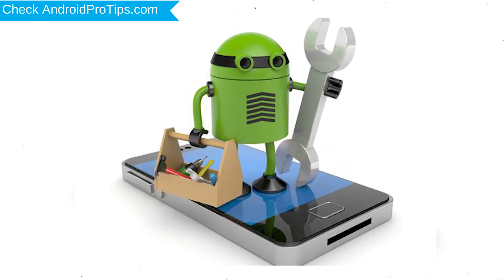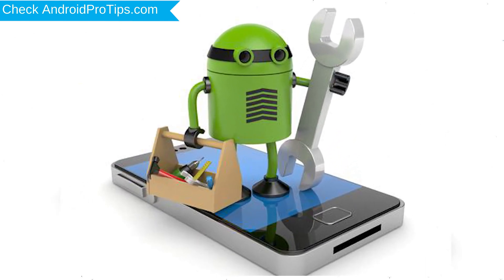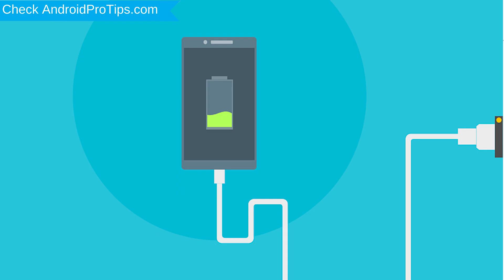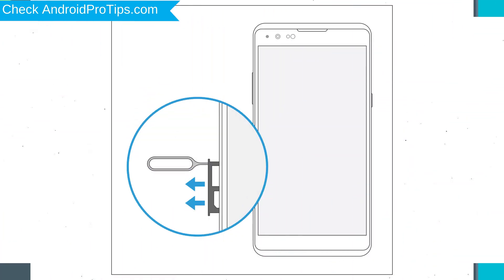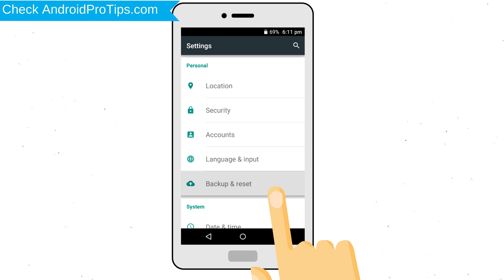Before resetting your mobile, your mobile battery must be above 50%. Remove SD cards and SIMs. Back up your Android mobile data if possible.